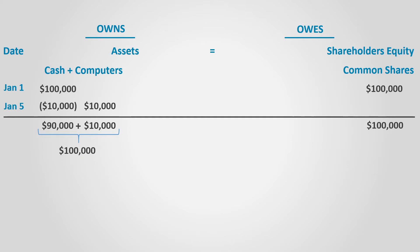The total amount of assets is $100,000, which is equal to shareholders' equity on the right-hand side. It is worth mentioning that an activity that affects one or more assets, liabilities, or shareholders' equity is called an accounting transaction.